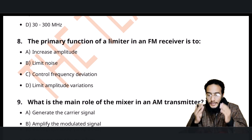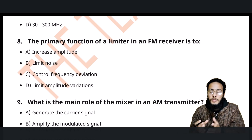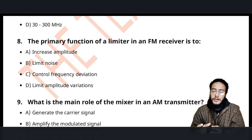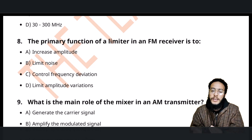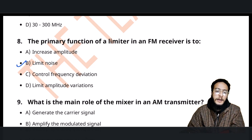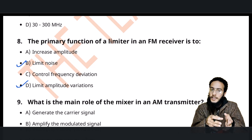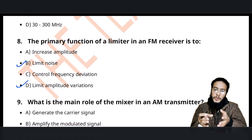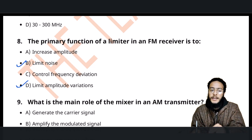The primary function of a limiter: when we receive an FM signal in the FM receiver, there is some noise remaining after demodulation. To reduce this noise, the limiter is used — it limits the amplitude variations, which reduces the noise. So both options will be correct: noise is reduced and amplitude variations are also reduced.